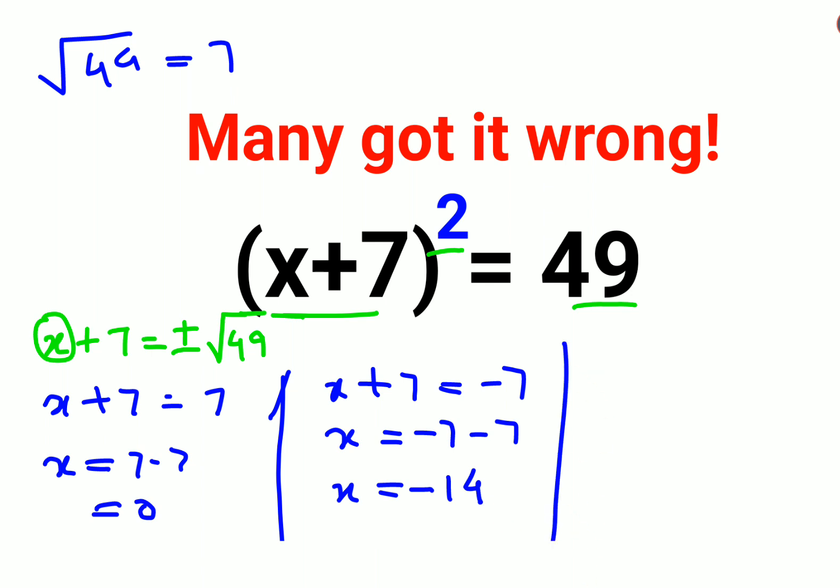So let's put the value over here. So we have minus 14 plus 7 the whole square. That is nothing but minus 7 the whole square. And that is 49. So we can say that is correct.